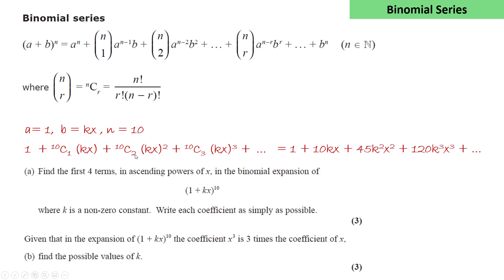Second step, we calculate the values of each of the coefficients. We're given, in the expansion of (1 + kx)^10, the coefficient of x³ is 3 times the coefficient of x. And we have to find the possible values of k.